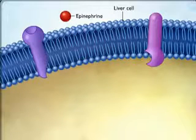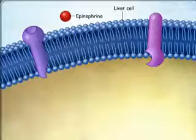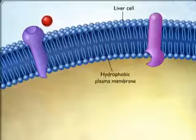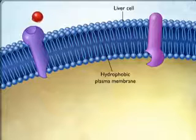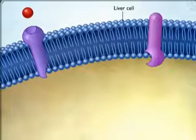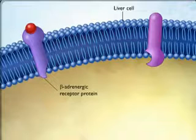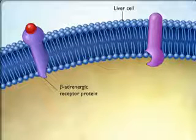Epinephrine is one of many hormones that is water-soluble and hydrophilic, and therefore unable to cross the hydrophobic plasma membranes of its target cells. Instead, it binds to receptor proteins located in the plasma membrane and does not enter the cell.